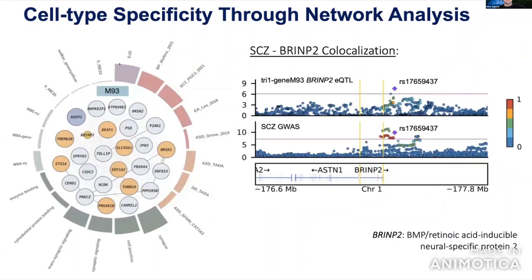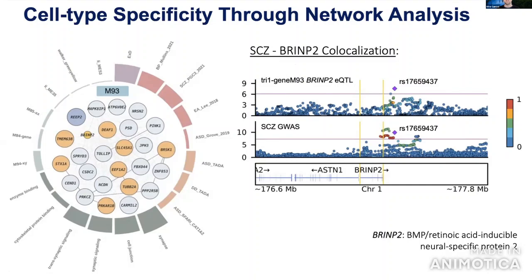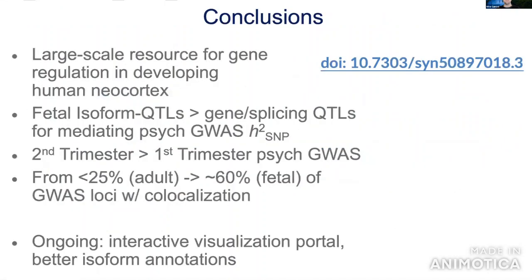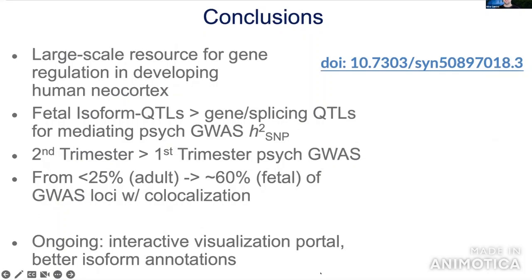One example is a module enriched for deep layer excitatory neuron markers with a significant interaction QTL with schizophrenia — the gene BrinP2 — appearing to act in the context of deep layer excitatory neurons. This gene functions in the retinoic acid signaling pathway important for cortical patterning and has been linked to schizophrenia previously. Summary statistics are available on the Synapse portal, with preprints and an interactive visualization portal coming soon.